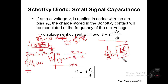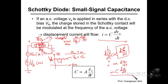A certain amount of charge is induced because of the DC bias. On top of that, the AC signal is applied, and because of that AC signal, the total charge induced in the MS contact is modified. The degree of that change is given by dQ/dt = C × dV_a/dt. From this equation, we need to tackle what the capacitance of the MS contact is.